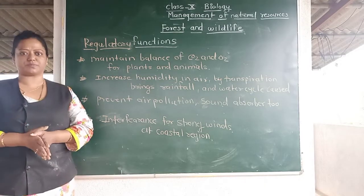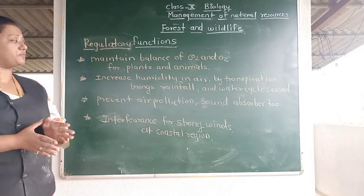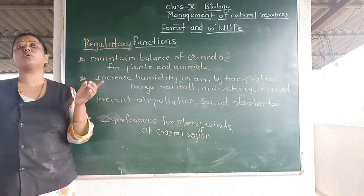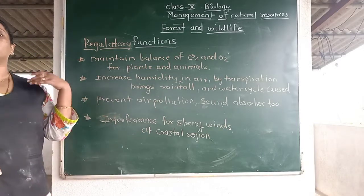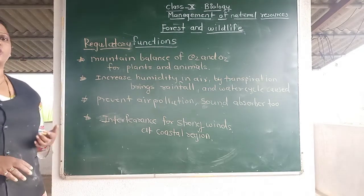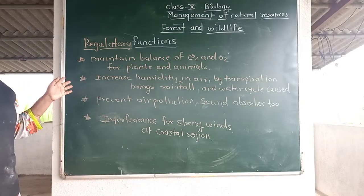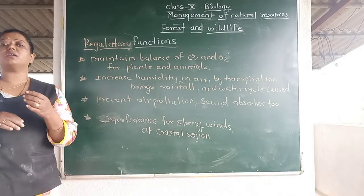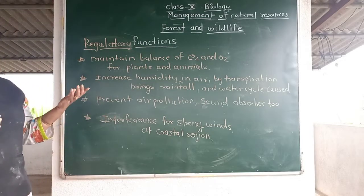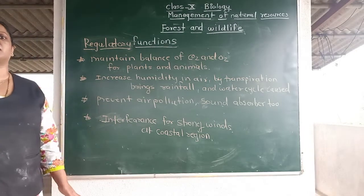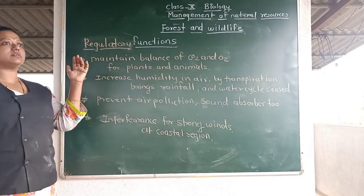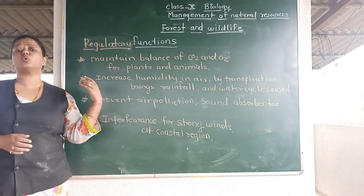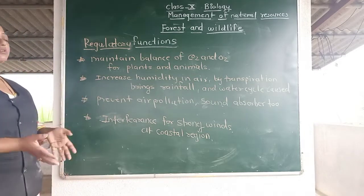Forests prevent air pollution by oxygenating the climate. Plants are also good sound absorbers — in huge factories and companies, large plants are grown around them for sound absorption and to check air pollution, keeping the climate clean and clear. Forests also interfere with strong winds — tall plants reduce the intensity of strong winds and cyclones. Some plants are grown in coastal regions to check cyclones such as the Nisarga cyclone.